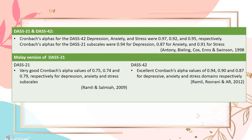The Cronbach's Alphas for the DASS-42 subscales of depression, anxiety, and stress were 0.97, 0.92, and 0.95 respectively. The Cronbach's Alphas for the DASS-21 subscales were 0.94 for depression, 0.87 for anxiety, and 0.91 for stress. The Malay version also has very good Cronbach's Alpha values for both versions.